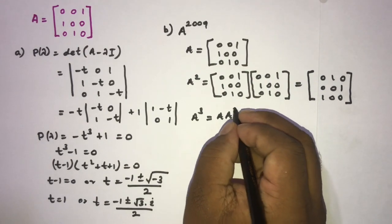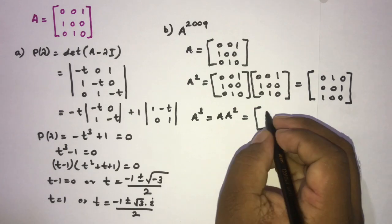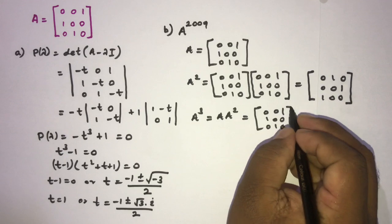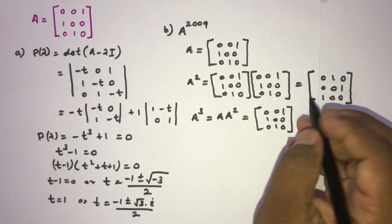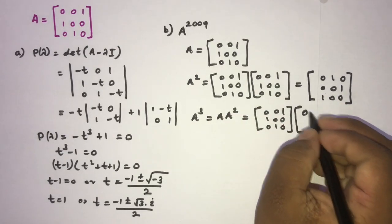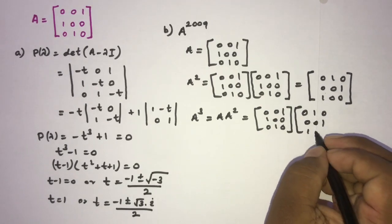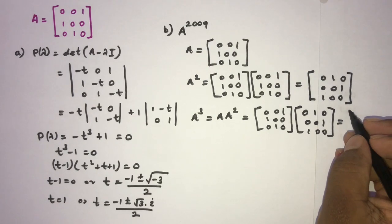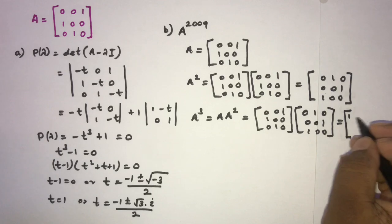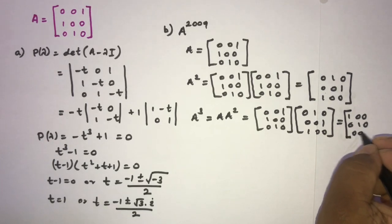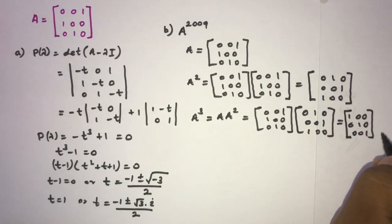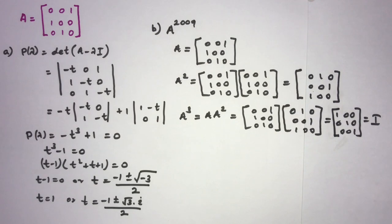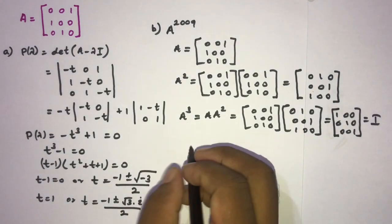We compute A cubed as A times A squared. Working through the matrix multiplication, A cubed simplifies to the 3×3 identity matrix I. This is a key result for evaluating large powers of A.